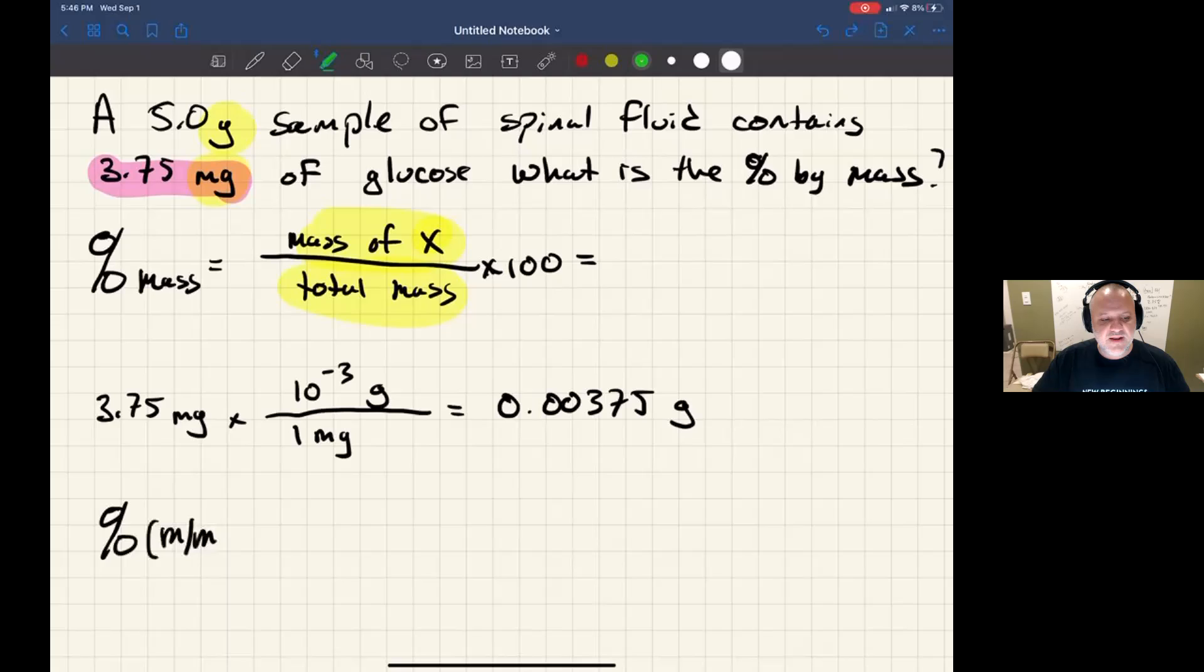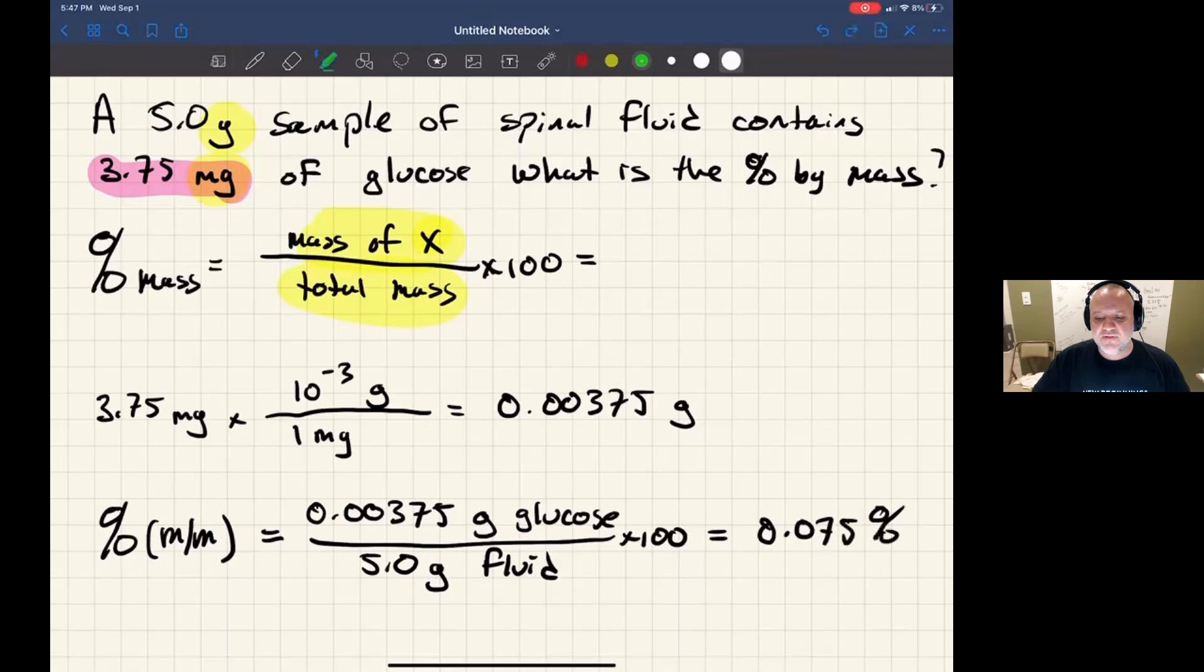Now, calculating the percentage by mass, I would go 0.00375 grams of glucose divided by 5.0 grams of fluid times 100, and I get 0.075%. That's the mass percentage of glucose. That's all there is to it.